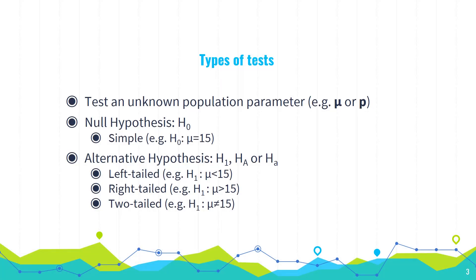Let's look at what kinds of tests we're going to be doing. You can test many things about a population, but we're going to be looking at testing parameters of the population. We're going to be trying to say whether this or that is a more plausible value for a population parameter — say the population mean or the population proportion. For the mean, a null hypothesis is going to be stated as a simple hypothesis, where the null hypothesis says that the mean is equal to some value.